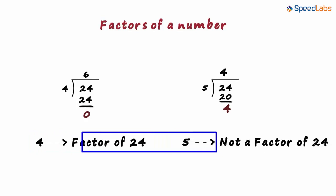And the fact that 5 is not a factor of 24 tells us that 24 cannot be divided into 5 equal parts. But what if we want to find all the factors of 24?